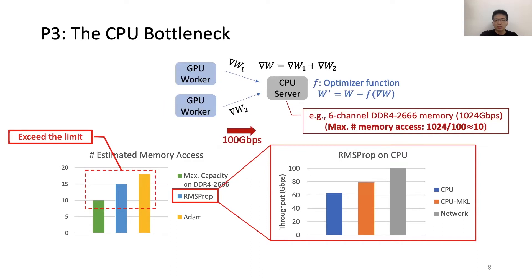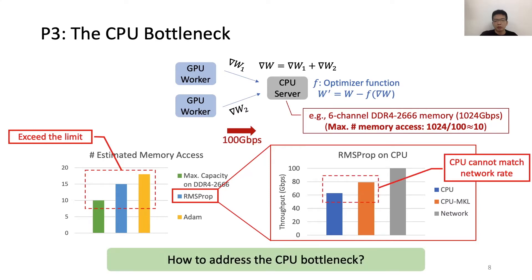For example, if we run RMSProp on CPUs, then the throughput is lower than the network rate. So our question is, how to address the CPU bottleneck?